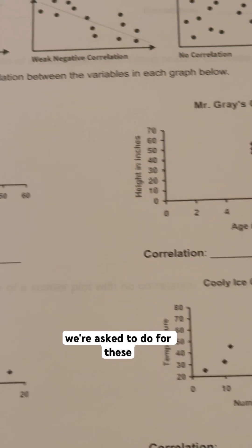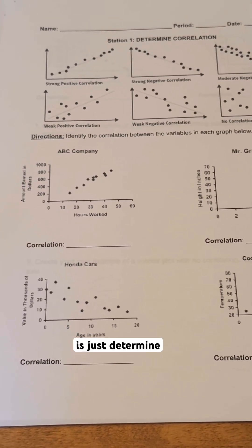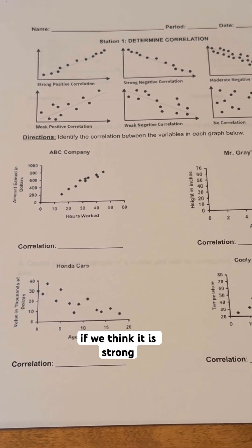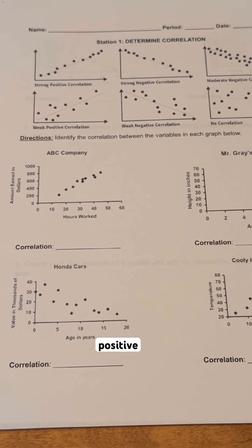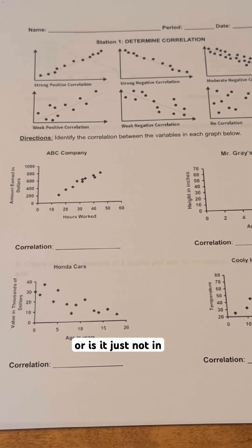All we're asked to do for these four problems here is to determine what is happening. If we think it is strong, is it weak? Is it positive? Is it negative? Or is it just not in any correlation whatsoever?